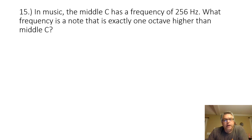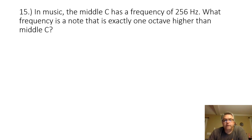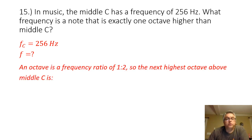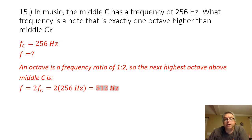Problem 15: In music, middle C has a frequency of 256 hertz. What frequency is a note that is exactly one octave higher than middle C? An octave has a frequency ratio of one to two, so the next highest octave must be twice the frequency of middle C. Two times 256 hertz gives a frequency of 512 hertz to go up one octave.